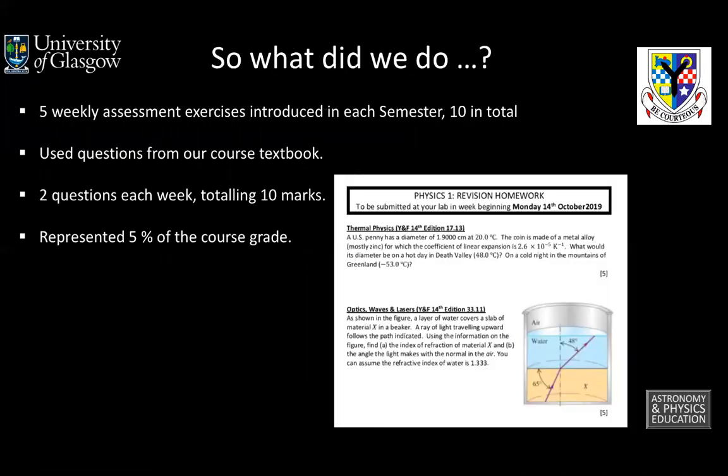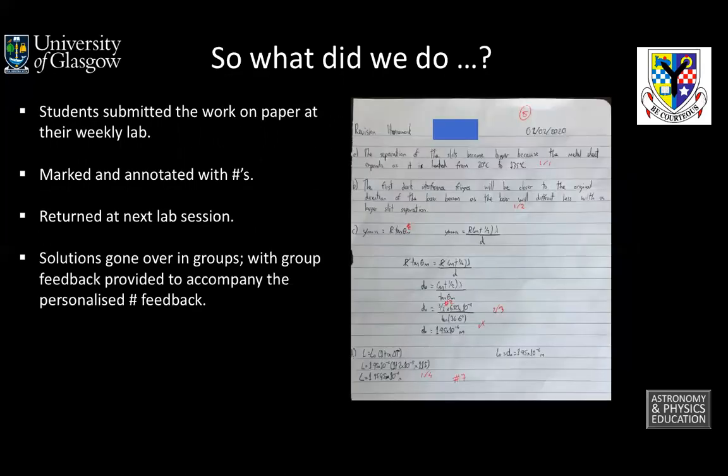So what I tried was we introduced weekly assessments — five in each semester, so ten over the academic year — using questions from the textbook. What you can see there is an example of the sheet we would give the students. There'd be 10 marks available each week and overall it represents 5% of the course grade for the year. We felt it was important to give credit so that students would take it a bit more seriously, but not too much because we didn't want to overweight it. Students would submit their attempts on a weekly basis through the lab class for administrative simplicity. I would mark it and then put hashtag feedback on it. Instead of having to write out repeated mistakes, I could just put the hashtags, which was a lot quicker — I could go through a group of about 50 homeworks in about an hour.